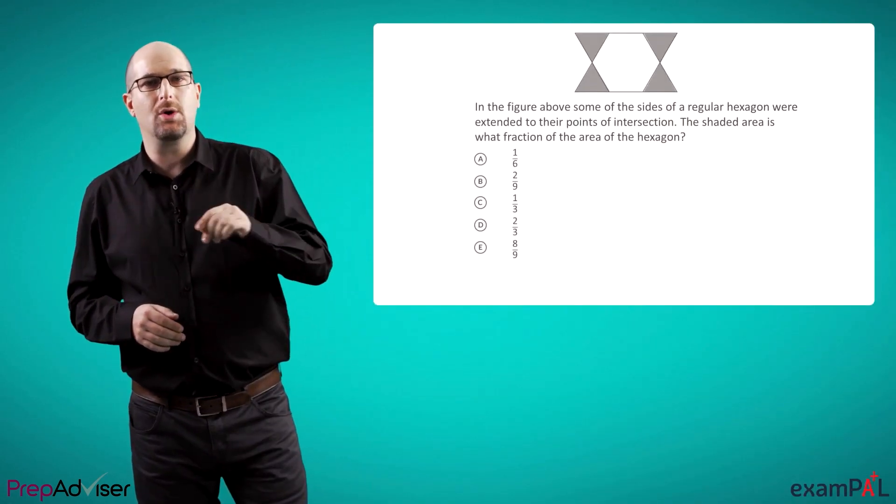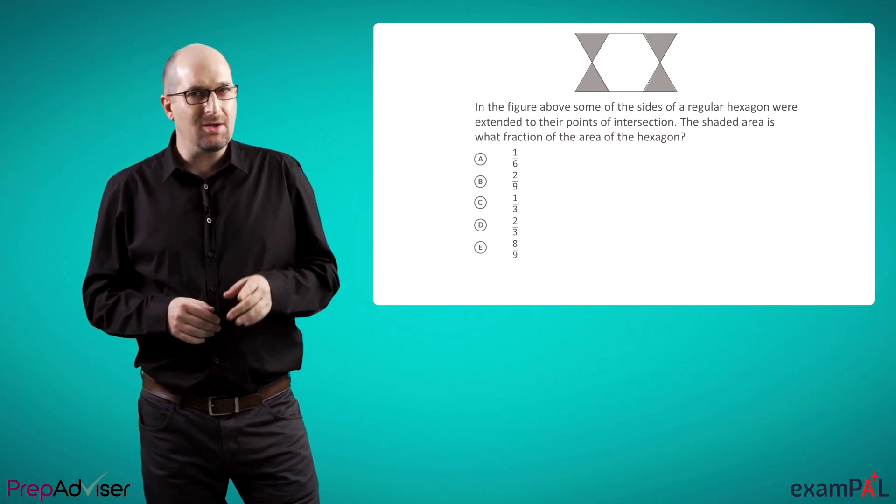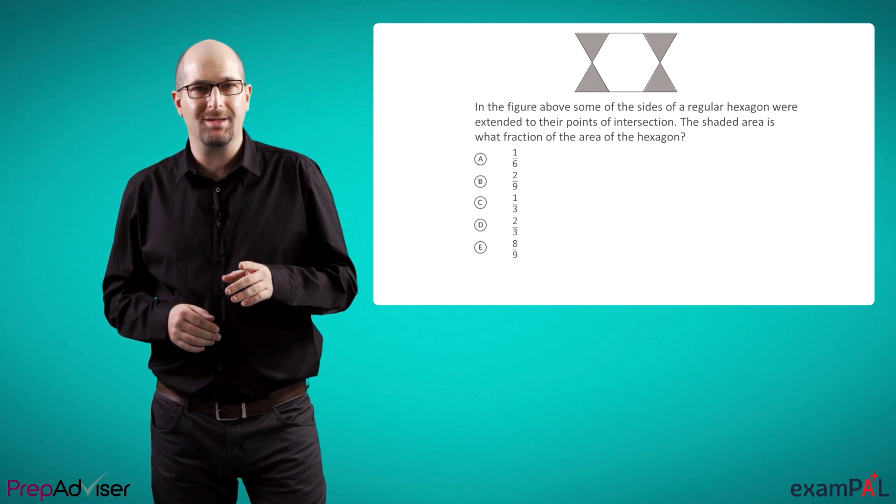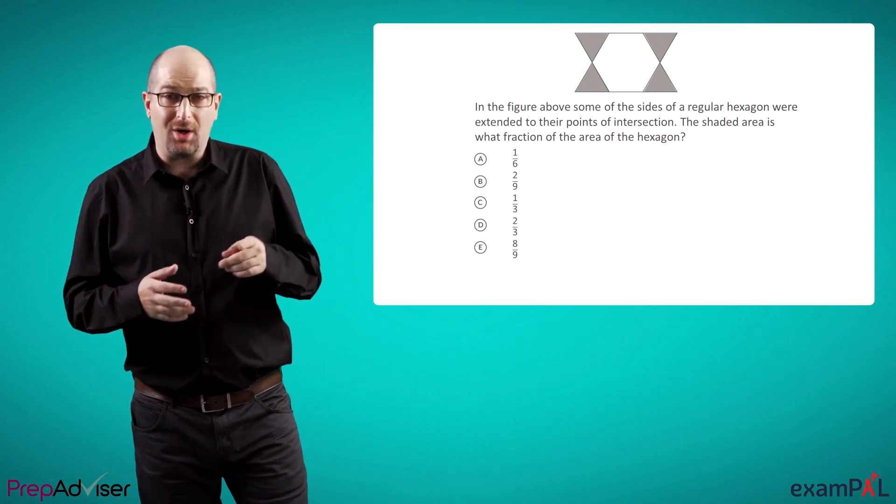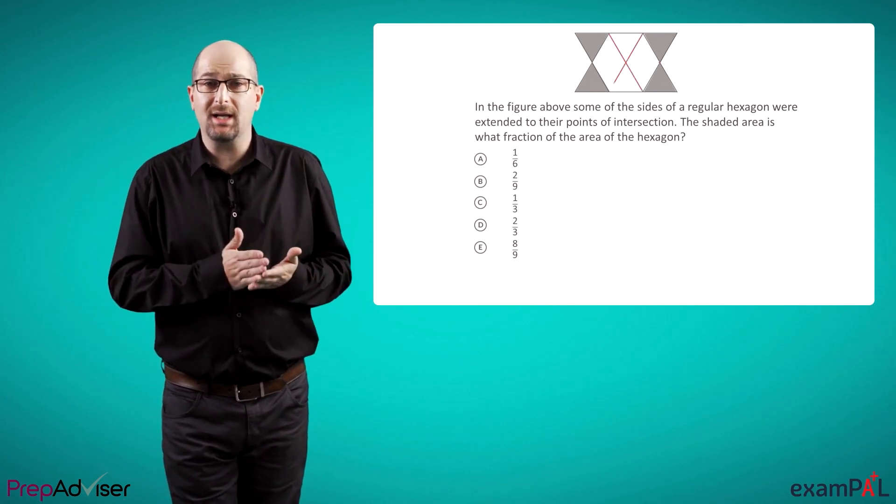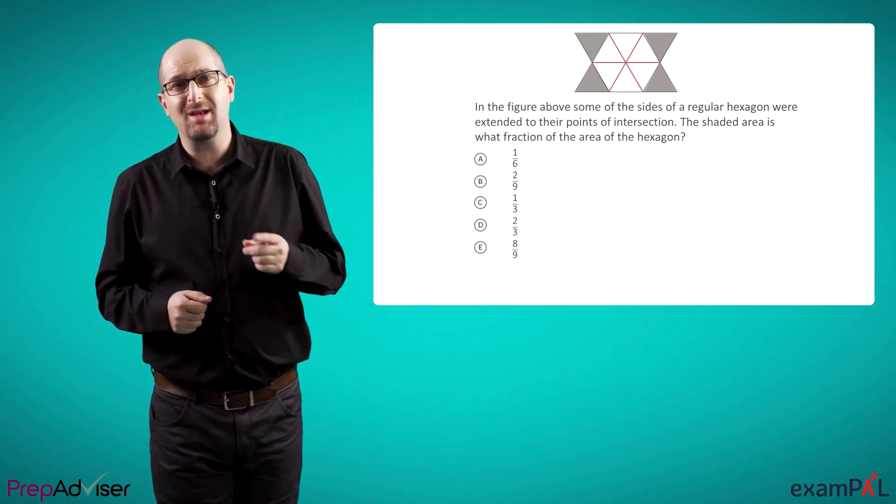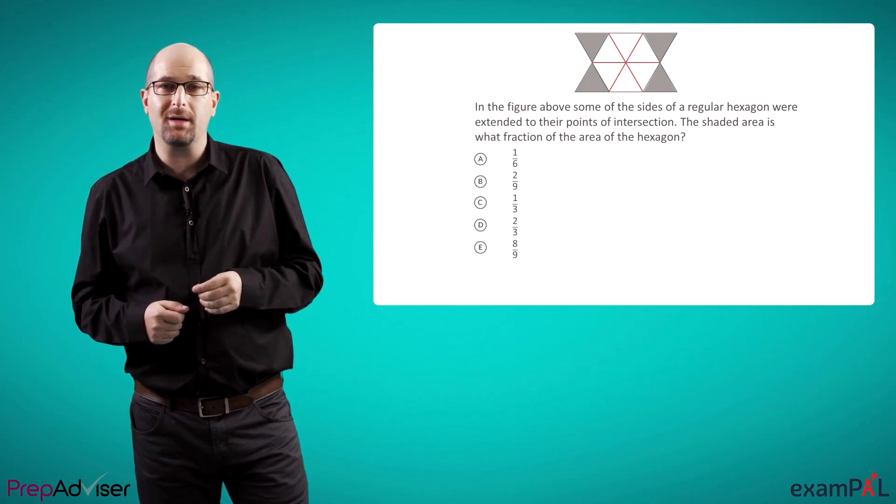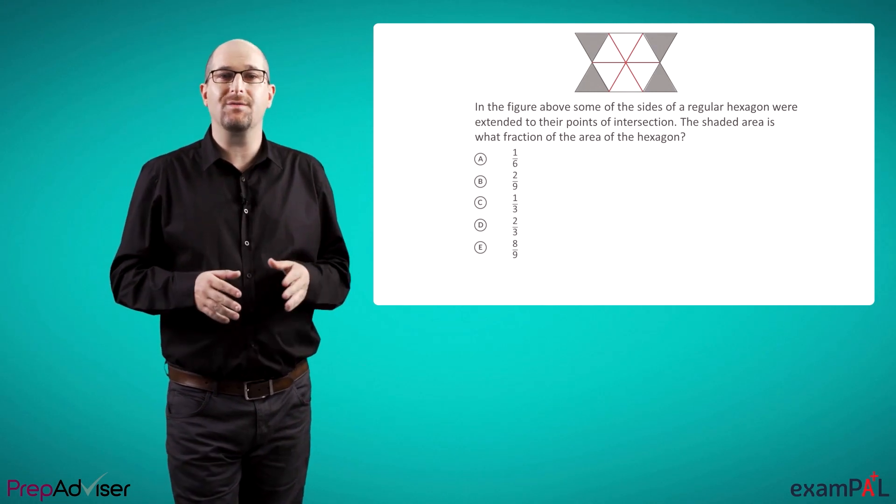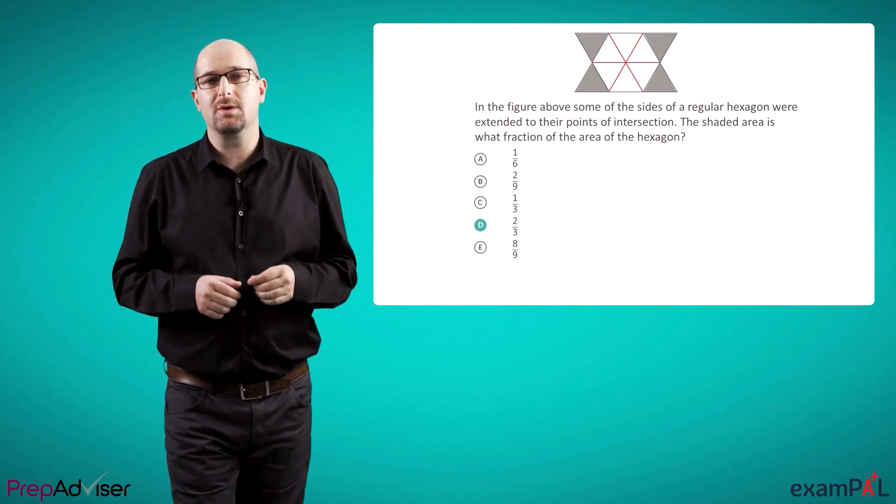An opposite case where we can trust the figure entirely is when we are shown a figure which can only be drawn in one way. This is the case with regular polygons. For example, in this question, we are told the figure is a regular hexagon. Since regular hexagons, by definition, always have equal sides and equal angles, there's no alternative way to draw this figure. Because of this, we can use the figure, cutting it into pieces, and trust the way they look to solve the question. In this case, the shaded triangles are each equal to the pieces we cut, and thus they make up four out of six pieces, which make two-thirds of the hexagon.